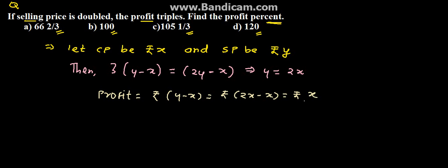So this is profit, profit is x. The profit will be the same as CP, because CP, that is cost price, is also x and profit is also x.